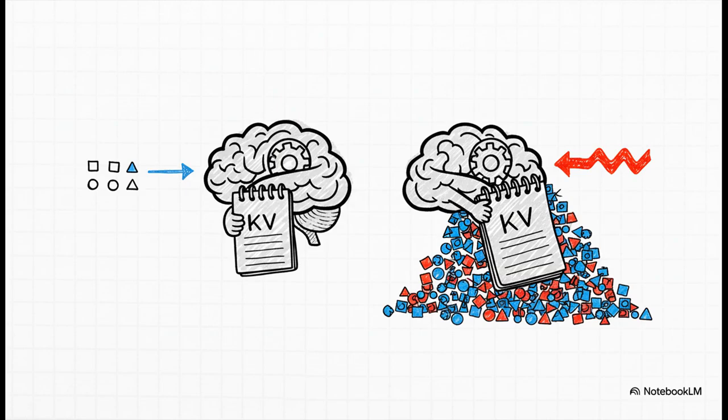So the technical villain here is something called the KV cache. The best way to think of it is like the AI's personal notebook. With the standard way of doing things, for every new piece of information it sees, it just adds another page. You can see the problem, right? For long documents, that notebook becomes impossibly heavy, and it gets incredibly slow to find anything useful in it.